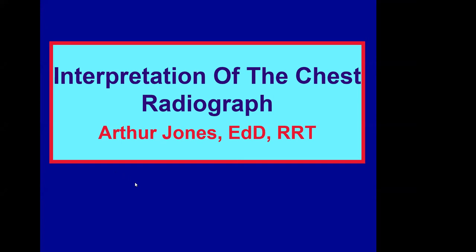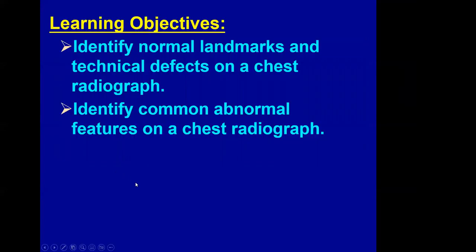Your objectives for this lesson: when you finish, you will be able to identify normal landmarks and technical defects on a chest radiograph. You will also be able to identify abnormal features on a chest radiograph, including those that are due to misplacement of various tubes and lines.